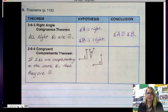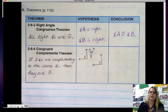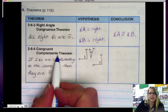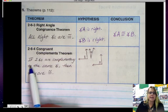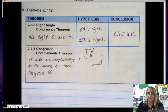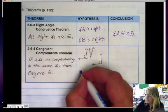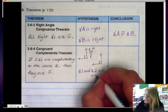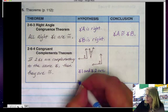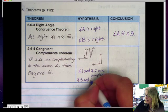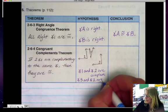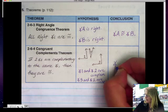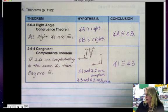Our Congruent Complements Theorem is the same as the one that we just did before, the Congruent Supplements Theorem, except this time we're talking about complementary angles and not supplementary angles. So this states that if two angles are complementary to the same angle, then they are congruent to each other. So if we're given that angle 1 and angle 2 are complementary, and we're also told that angle 3 and angle 2 are complementary,